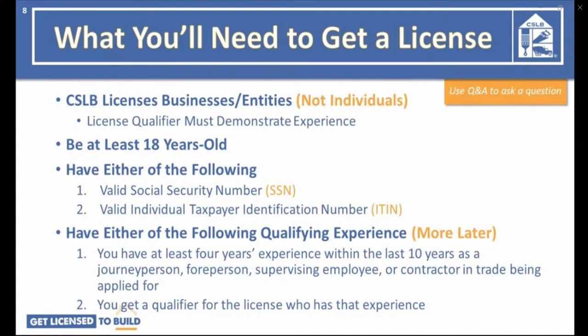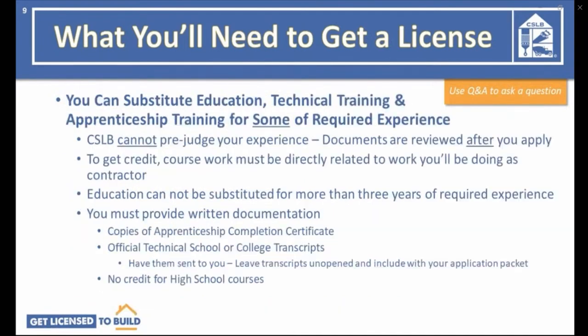Here are the minimum qualifications you will need. You must be at least 18 years of age and have either a valid social security number or a valid individual taxpayer identification number (ITIN). You can qualify the license by having at least four years' experience within the last 10 years as a journeyperson, foreperson, supervising employee, or contractor in the trade being applied for. Or you can also find a qualifier for the license who has that required experience.